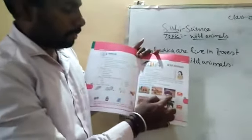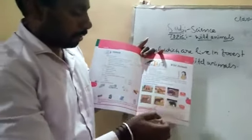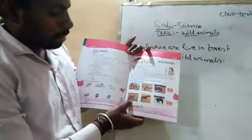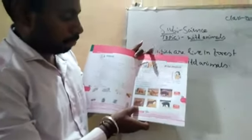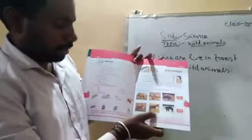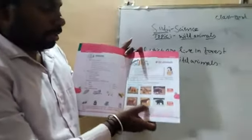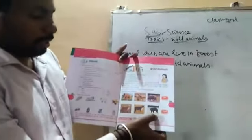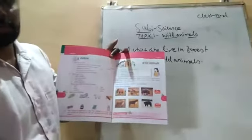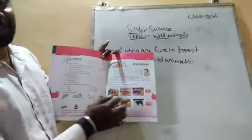The elephant. This is the giraffe. This is the rhinoceros. This is the wolf. And this is the cheetah. And this is the bear. You write the names here.